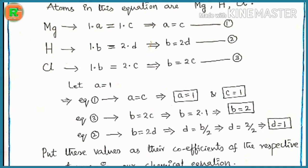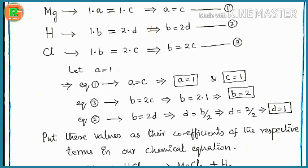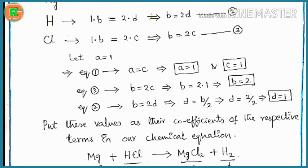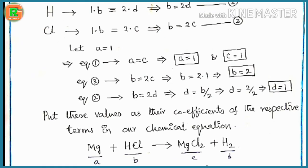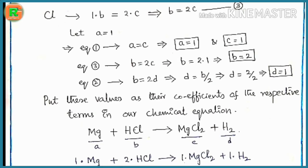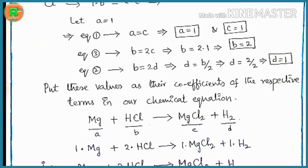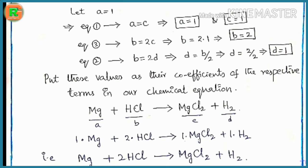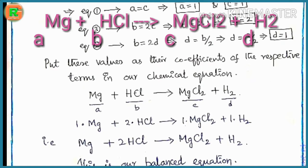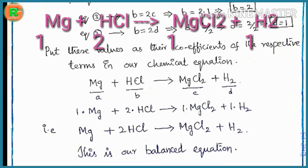Now solving for A, B, C, D: let A = 1. From equation 1, A = C, so C = 1. From equation 3, B = 2C, so B = 2. From equation 2, B = 2D, so D = B/2 = 2/2 = 1.